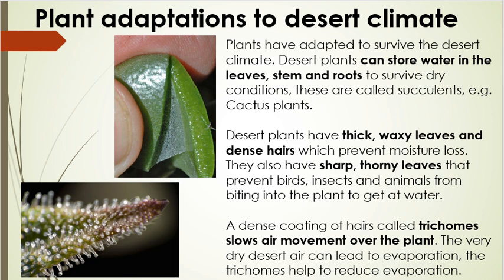Desert plants have thick, waxy leaves and dense hairs which prevent moisture loss. Looking at the picture, you can see a leaf snapped in half — notice how thick it is relative to a finger. That thickness prevents the leaf from losing moisture. Other plants have sharp, thorny leaves that prevent birds, insects, and animals from biting into the plant to get water. The cactus is the most famous example — its spikes are a defense mechanism to stop animals and birds from accessing its stored water.